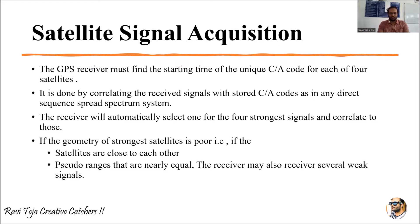Or the pseudo ranges of each satellite are nearly equal, which causes the GPS receiver to get confused. Sometimes the receiver may also receive weak signals due to any condition. This is when the satellite geometry of its strongest satellite can be poor.